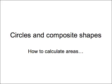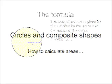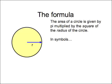In this short video, we'll review the formula for the area of a circle and for the areas of various composite shapes. The formula for the area of a circle is given by pi multiplied by the square of the radius of the circle.